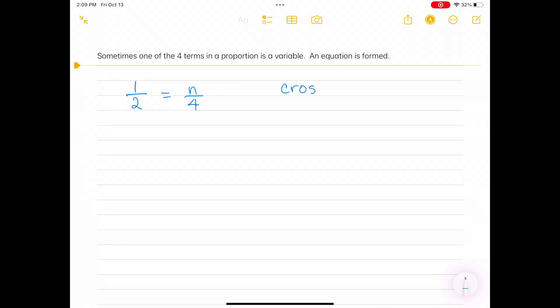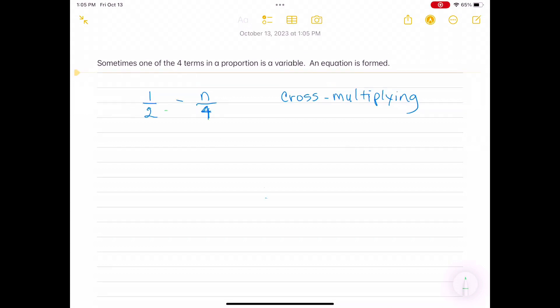The other way of solving for N in this equation is by cross-multiplying in the proportion. So 2 times N equals 1 times 4, or 2N equals 4. Now we solve for N by dividing both sides of the equation by 2. On the left-hand side, the twos cancel, leaving N. And on the right-hand side, 4 divided by 2 equals 2. N equals 2.